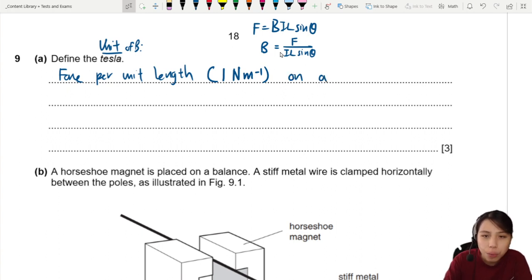So on a wire, carrying one amp of current. Or sometimes you want to make it clear that it's divided by current. Okay. So we can say divided by or per wire carrying one amp of current.